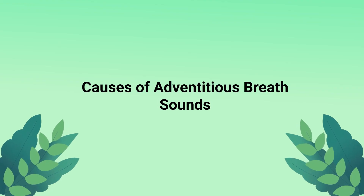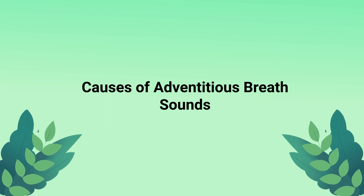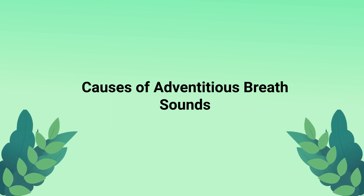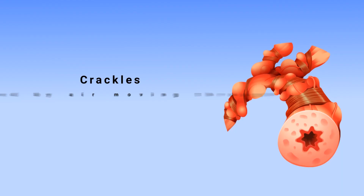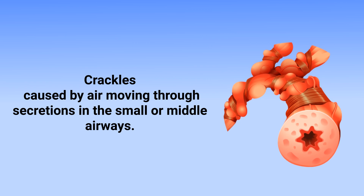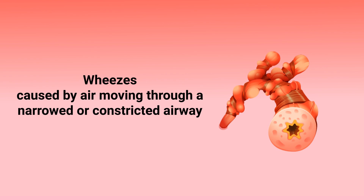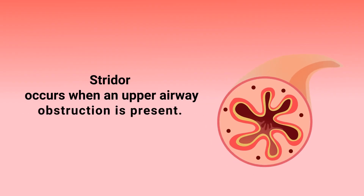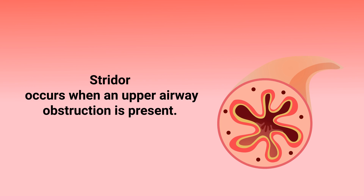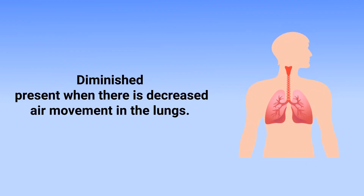Each type of abnormal breath sound has a different cause. For example, crackles are typically caused by air moving through secretions in the small or middle airways. Wheezes are caused by air moving through a narrowed or constricted airway. Ronchi is typically caused by air moving through secretions in the larger airways. Stridor occurs when an upper airway obstruction is present. Diminished sounds are present when there is decreased air movement in the lungs.